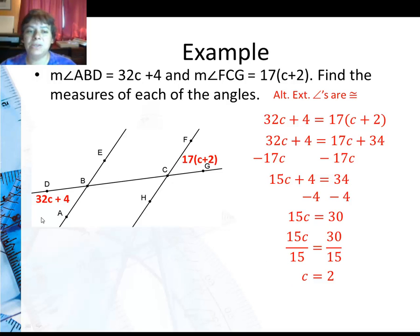Now I can take this 2 and substitute it back in for C. And I get 32 times 2 plus 4, or 64 plus 4, which is 68. I could also put the 2 in here just to double check. And I get 4 times 17, which is also 68. So let me go ahead and put the 68 degrees here, and the 68 degrees there.